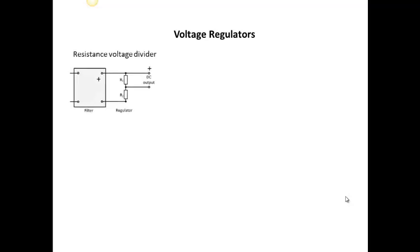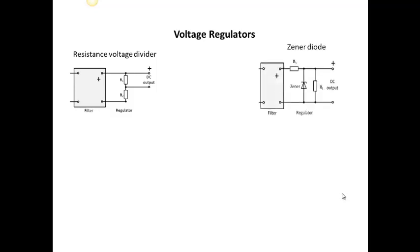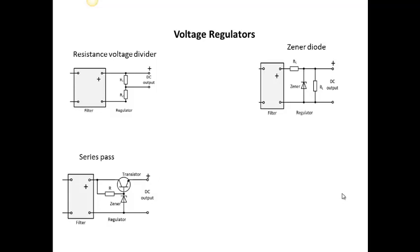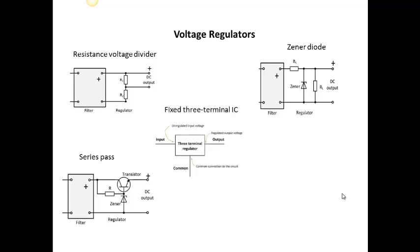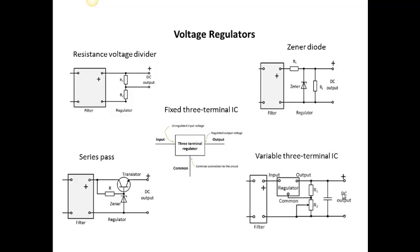This is video 4 and it looks at voltage regulators. We've smoothed out the DC pulse using filters, and now we're going to make sure the output voltage is constant. We can use a resistance voltage divider, a zener diode, a series pass, a fixed three terminal IC, or a variable three terminal IC, and we'll look at these in turn.